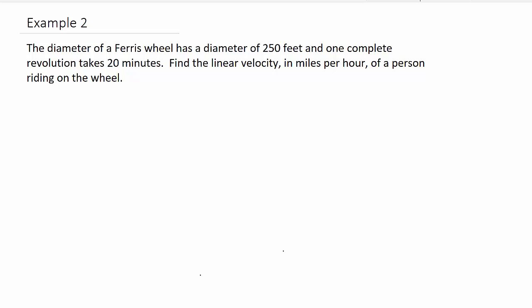Alright, so let's go ahead and write our formula down. Velocity is S over T, and we know that S is theta times R, where theta is in radians. Alright, so let's look at this. They give us the diameter in feet and the time it takes to make one revolution in minutes. So our solution would be feet per minute, but they want the answer in miles per hour.